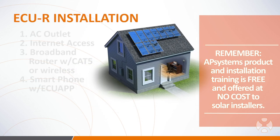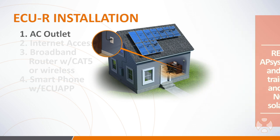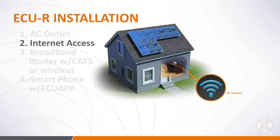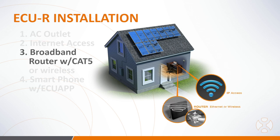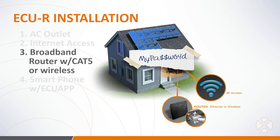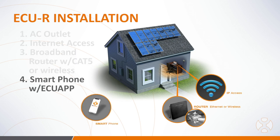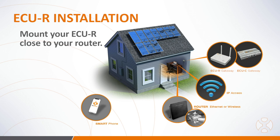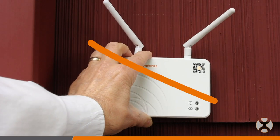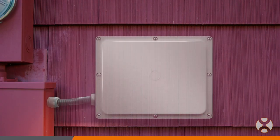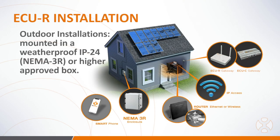In preparing to install the ECUR, be sure to have the following necessary components available: a dedicated standard AC electrical outlet located as close to the array as possible, a broadband internet connection, a broadband router with a CAT5 ethernet connection or a wireless router — if wireless, obtain the router password from the home or site owner — and a smartphone with the AP Systems ECU app installed. Note that a smartphone with Wi-Fi capability is required. When selecting an installation location, choose a spot close to the homeowner's router. Be aware the ECUR is not rated for outdoor use; if outdoor installation is required, enclose it in a weatherproof IP24 or NEMA 3R or higher electrical box.